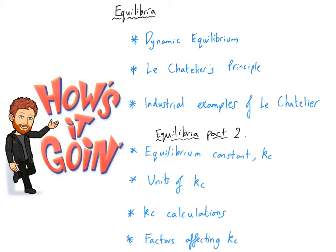Hello everybody and welcome to this A-level chemistry video about Equilibria, which is one of the year one topics. In this video we will take a look at dynamic equilibrium as applied to reversible reactions, Le Chatelier's principles and how equilibria shift when conditions change, and industrial examples of how we can maximise yields. In a separate video we will look at the equilibrium constant Kc and associated calculations, so check that video out after you've watched this one.